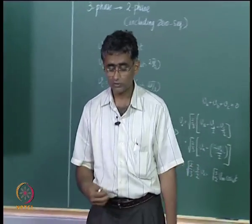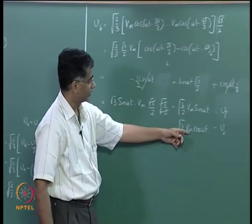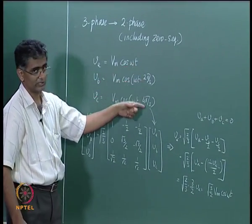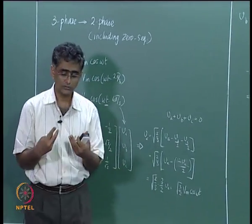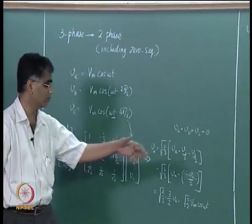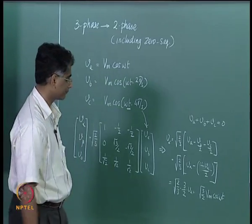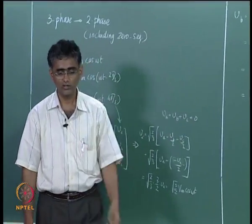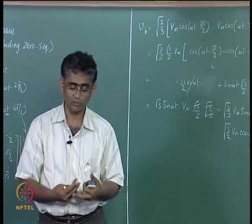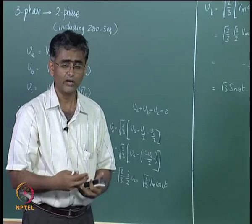The applied voltages exciting the induction machine in the two-phase frame are phase-shifted by 90 degrees, whereas in the three-phase machine they are phase-shifted by 120 degrees. A two-phase induction machine with excitations 90° apart will behave the same as a three-phase machine with excitations 120° apart. The equations have been appropriately modified, so instead of going from three-phase to two-phase we could start writing expressions directly from the two-phase system.